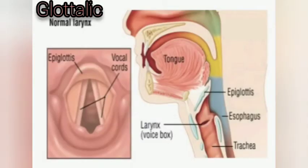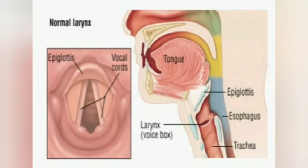The Glottalic Airstream Mechanism uses the closed glottis as an initiator. Both egressive and ingressive glottalic airstream mechanisms are used by some languages of the world for the articulation of speech sounds. Among Indian languages, Sindhi has sounds articulated with the glottalic ingressive airstream mechanism. These sounds are called implosives.